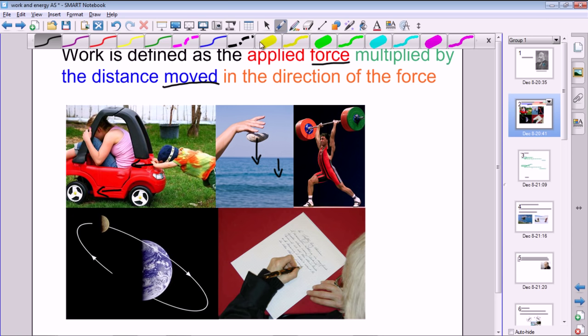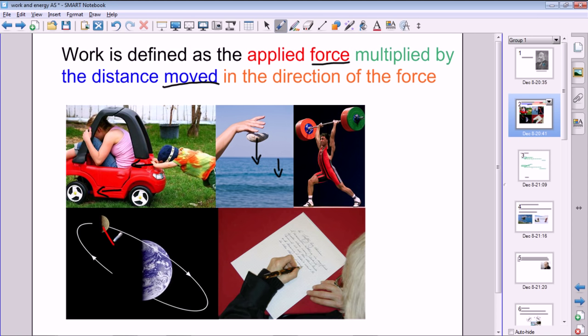This one here is quite an interesting one with the earth. We have the moon in orbit around the earth. Now the force on the moon is towards the center of the earth. This is quite difficult to see because it's a sort of 3D diagram. Whereas the distance moved at this particular instant is in that direction, this is towards the center and this is tangentially around the circle.